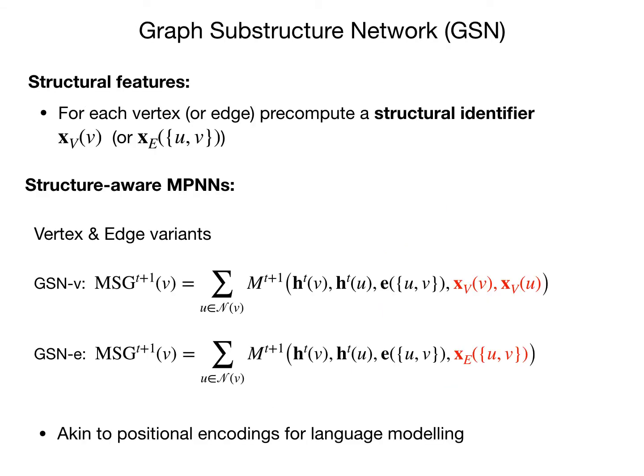To this end, we propose graph substructure networks — a method that enhances traditional message passing with structural information that MPNNs otherwise wouldn't be able to compute by themselves. We propose two variants: one where we assign structural identifiers to vertices of the graph, and another where we assign structural information to edges of the graph. This is akin to absolute and relative positional encodings for language modeling.